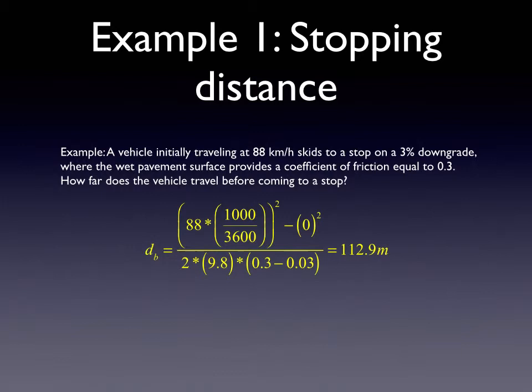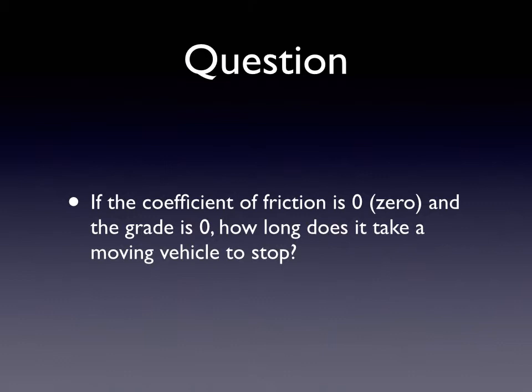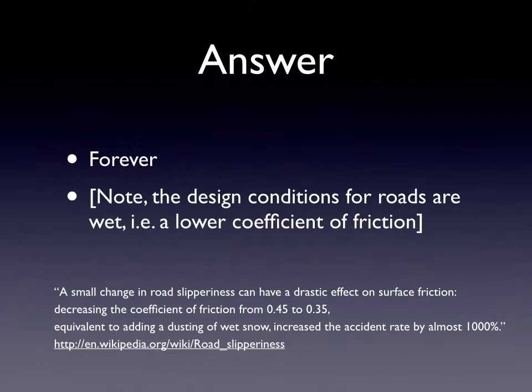So snow and ice is reducing the amount of friction on the roadway. Snow may be increasing the amount of friction on the roadway depending on what kind of snow it is, but generally your road conditions are getting worse. So the coefficient of friction is 0 and your grade is 0. How long does it take a moving vehicle to stop? An infinite amount of time. Because this is 0 and this is 0, then we have 9.8 times 0 and this velocity won't change. The braking distance would be infinity.